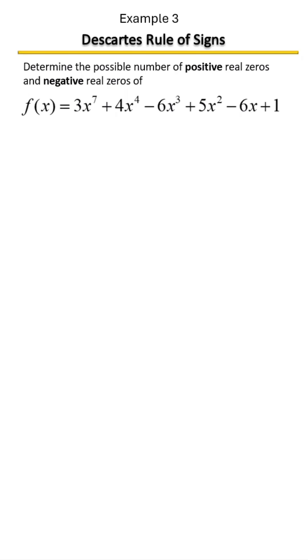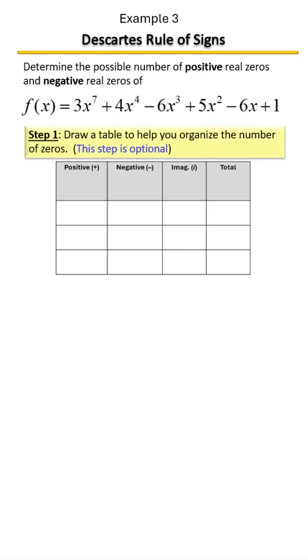Here we're going to determine the possible number of positive and negative zeros of this polynomial. You may want to sketch a table to help you organize your zeros. We're going to start by looking at the degree of the polynomial. This is a seventh degree polynomial, and since it's a seventh degree polynomial, our totals and the numbers here should be seven.